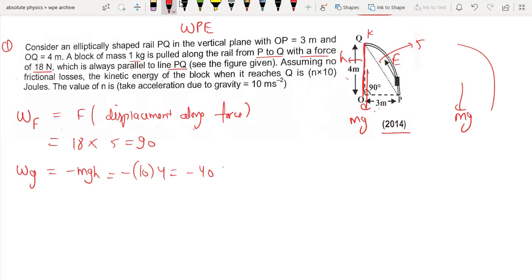The work done by gravity plus work done by force equals change in kinetic energy. This equals 50 joules, which is K_Q minus K_P. Since the block starts from rest at P, K_P equals 0.